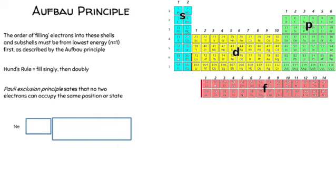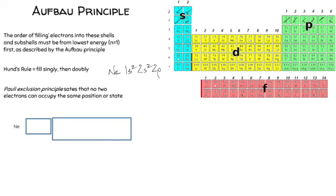There are two more rules to look at alongside the Aufbau principle: Hund's rule and the Pauli exclusion principle, which we'll apply when drawing orbital diagrams. Let's do an example with neon using the periodic table to work out electron configuration. Starting from the periodic table: 1S2, 2S2, and then into the P block — 2P with 1, 2, 3, 4, 5, 6 — giving 2P6. That's the complete electron configuration for neon.